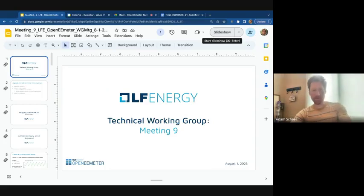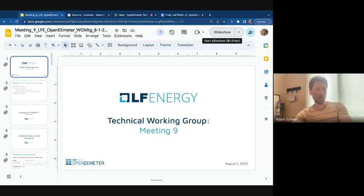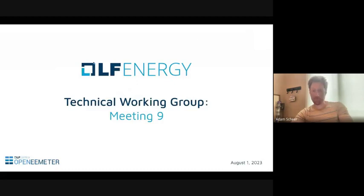Thanks to everybody for joining. We've had a little bit of a break because last month was the July 4th holiday, but we're going to get back on track. We were at a natural point where a break was good anyway, since we were getting to the end of the CalTrack 2.1 daily model. We've spent essentially eight meetings talking about the daily model, and this is the ninth working group meeting.